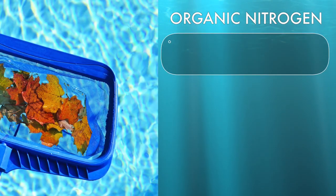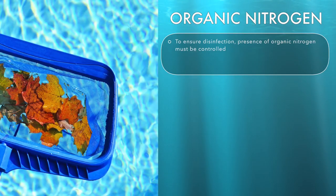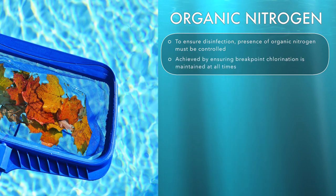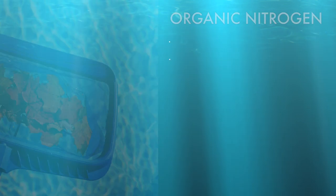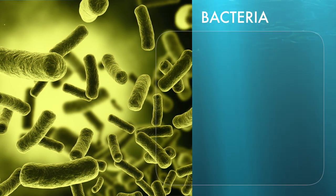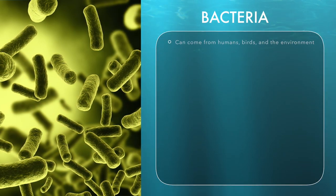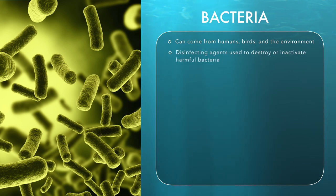To ensure effective disinfection in pool water, the presence of organic nitrogen must be controlled. This can be achieved by ensuring breakpoint chlorination is maintained at all times. Bacteria can come from humans, animals such as birds, and the environment. Disinfecting agents are used to destroy or inactivate harmful bacteria.